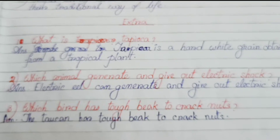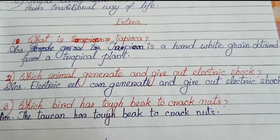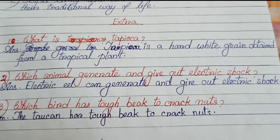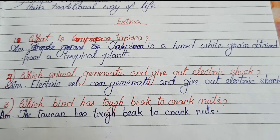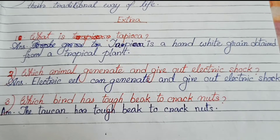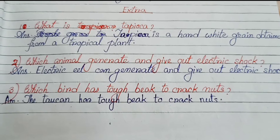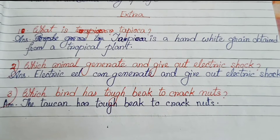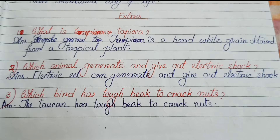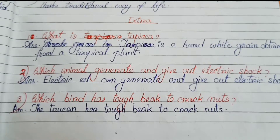Now it's time for the inside question answers from the chapter. Number 1: What is tapioca? Tapioca is a hard, wide grain obtained from a tropical plant. Number 2: Which animal can generate and give out electric shock? The electric eel can generate and give out electric shock.